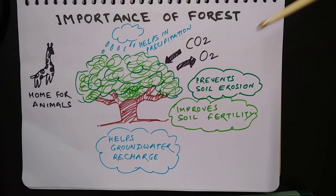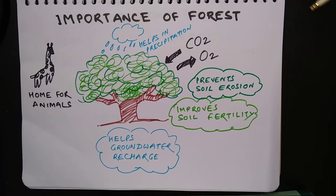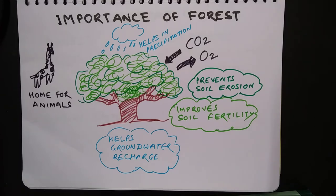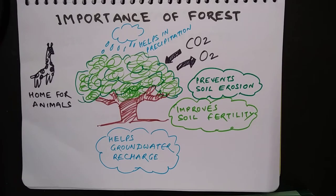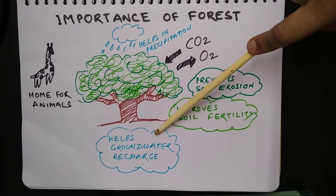By doing so, forests maintain the balance between carbon dioxide and oxygen in the atmosphere. Roots hold the topsoil in place, and that is how forests prevent soil erosion. Forests also improve soil fertility because dead remains like fallen leaves and dead creatures turn into humus after decomposition. The roots of trees make soil porous, and thus forests help in the natural recharge of groundwater.